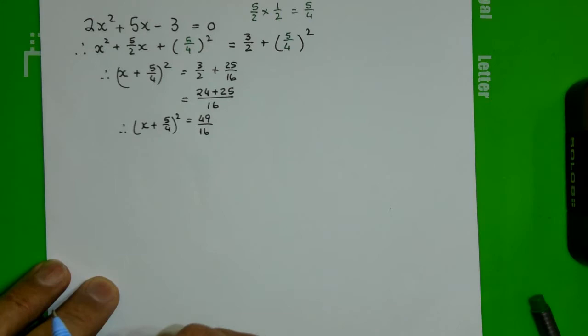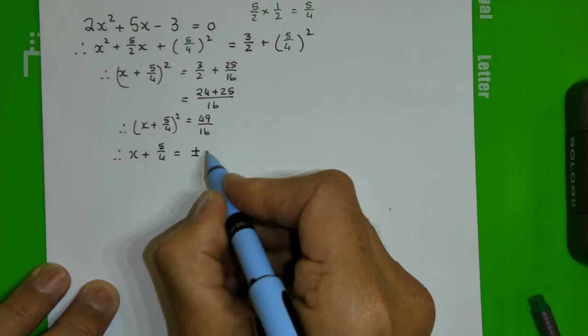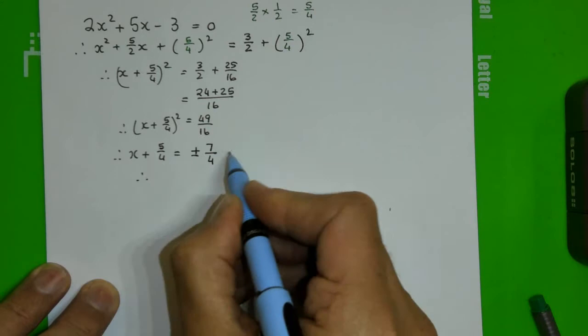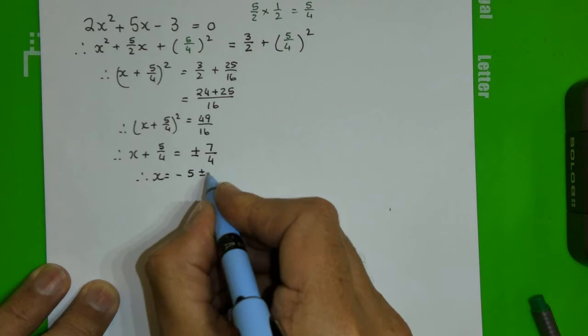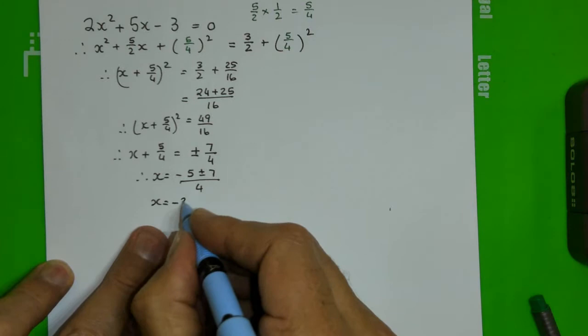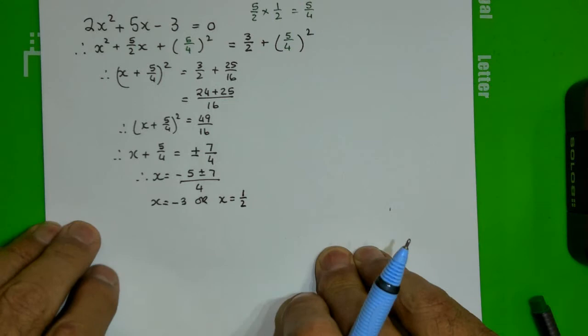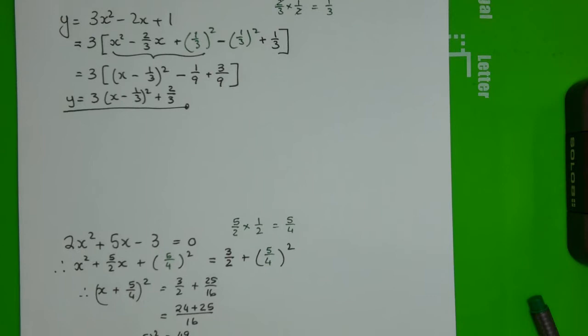I'm very close to solving this. I take the square root of both sides, so I get x + 5/4 equals plus or minus 7/4 — the square root of 49 is 7, and the square root of 16 is 4. Kicking 5/4 to the other side gives minus 5 ± 7 all over 4, which gives two answers: x = (−5 − 7)/4 = −12/4 = −3, or x = (−5 + 7)/4 = 2/4 = 1/2.